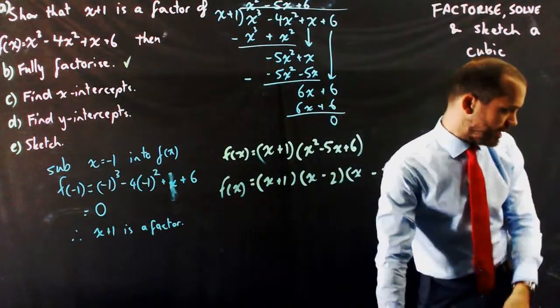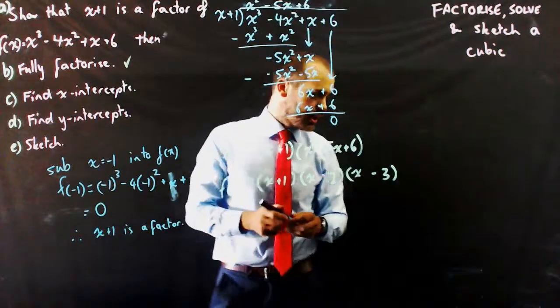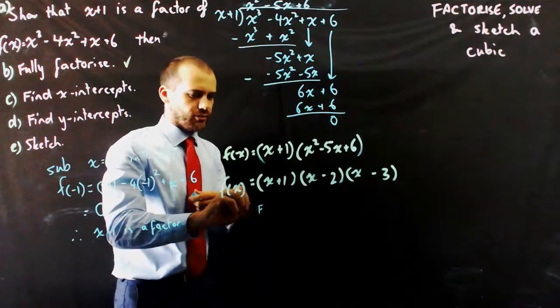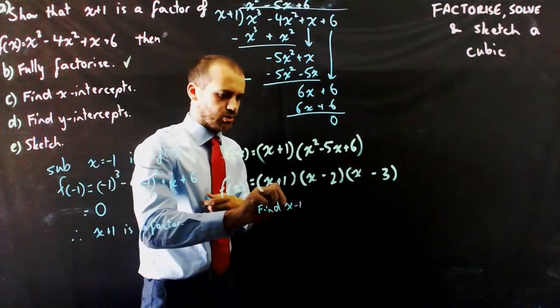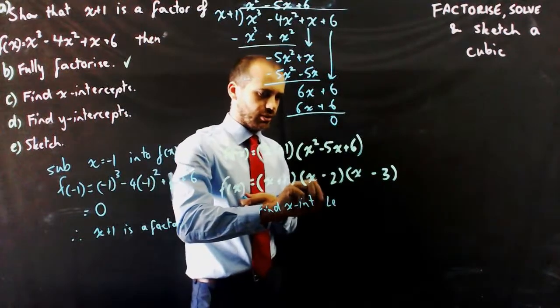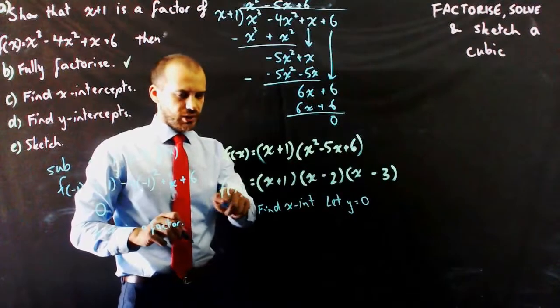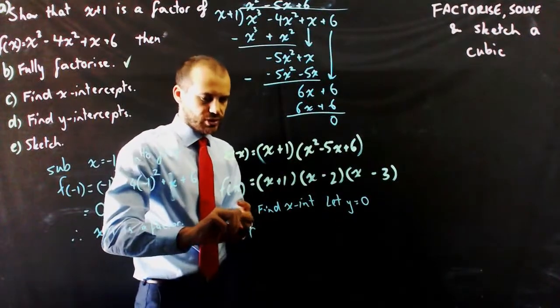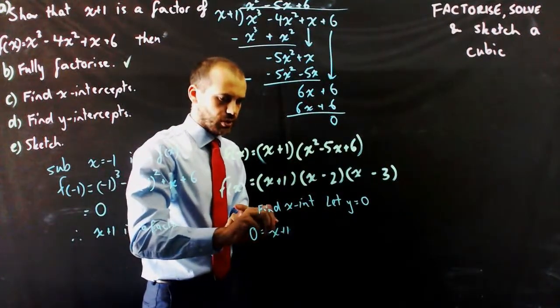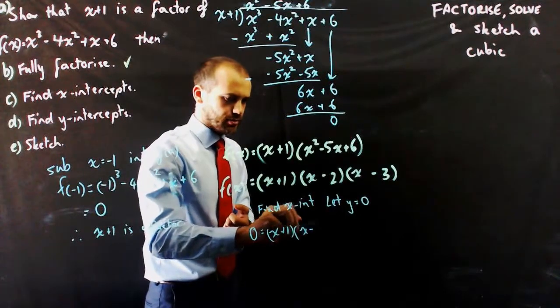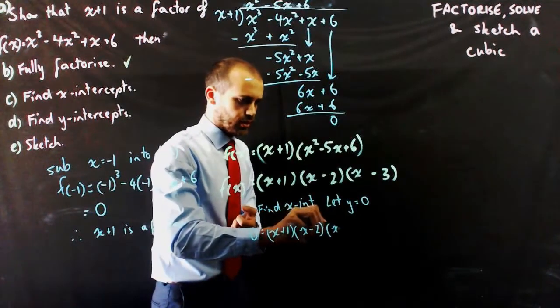Now, my next step or my next part of this question was to find the x intercepts. And to find x intercepts you all know now let y equal 0. So if I let f of x equal 0, I have 0 equals x plus 1 x minus 2 x minus 3.